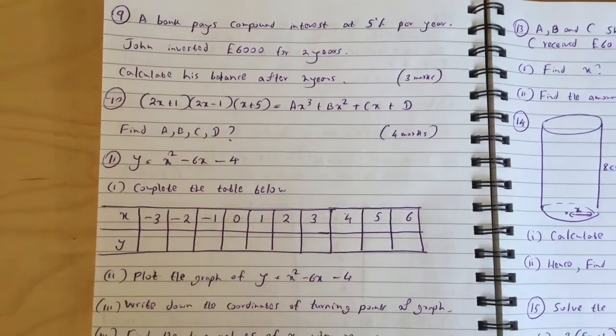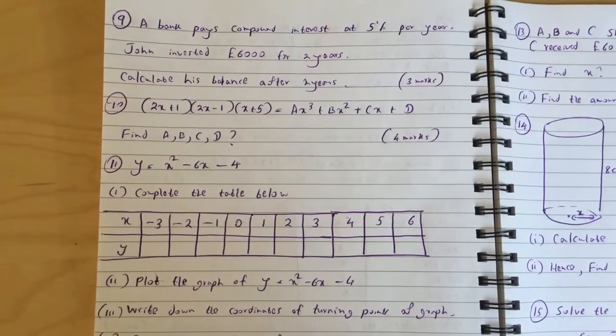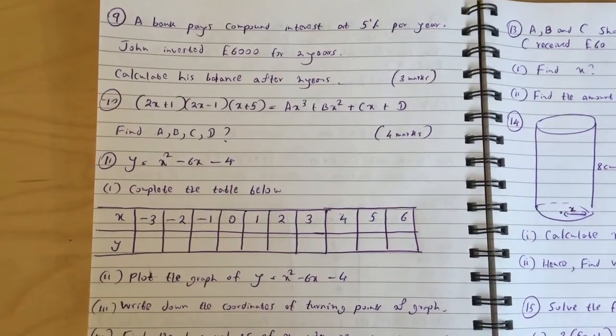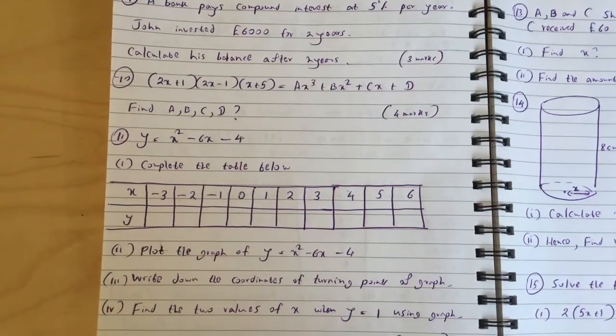Question 10: 2x plus 1 times 2x minus 1 times x plus 5 equals ax cubed plus bx squared plus cx plus d. Find a, b, c, d.